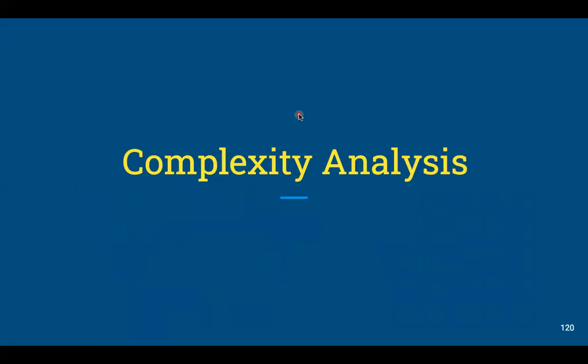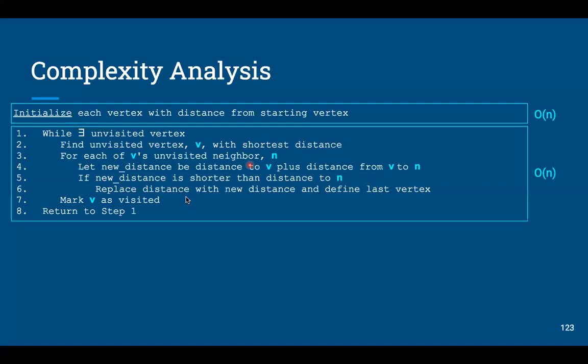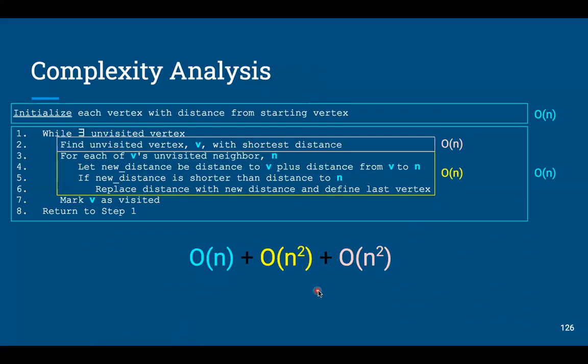Now let's take a look at the complexity analysis of this algorithm, how much time it'll take. Here's the pseudocode again. The initialization part is order n—we go to each vertex and initialize it with the distance, either zero or infinity. The main loop, we go to each unvisited vertex, so that's also order n. But inside the main loop, there's a nested loop, a for loop, where for each vertex we go to each of its unvisited neighbor. That's potentially an order n loop. There's another order n operation here, and that's implicit within the find. You're looking for the vertex with the shortest distance, so you may go through all the vertices. That's order n, just to find one with the shortest distance.